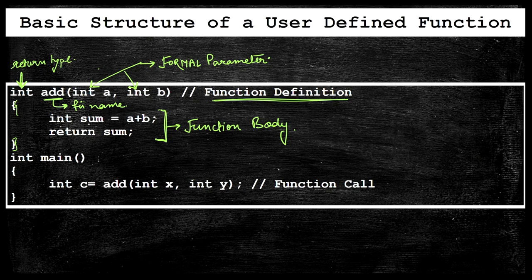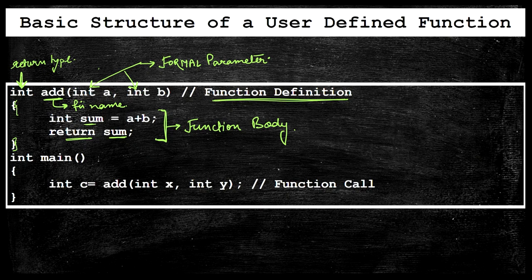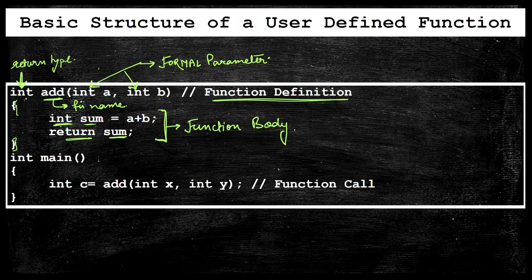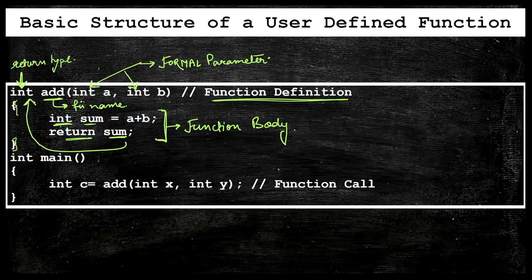In the function body, there is int sum equal to a plus b, meaning int a and int b are added and stored in the variable sum. The return statement returns sum as the output. Since sum is of integer type, the return type of the function is int.